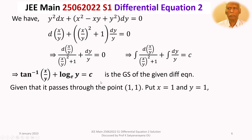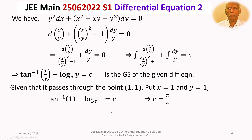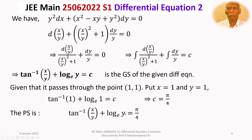To evaluate c, the solution curve passes through the point (1, 1). Substituting x = 1, y = 1: tan⁻¹(1/1) + log_e(1) = c. Since log_e(1) = 0 and tan⁻¹(1) = π/4, we get c = π/4. Thus the particular solution is tan⁻¹(x/y) + log_e(y) = π/4.